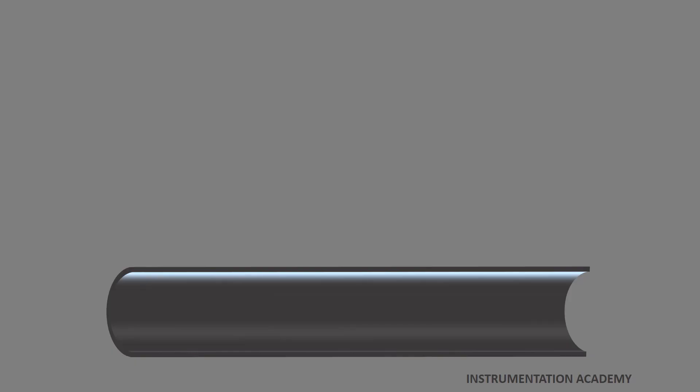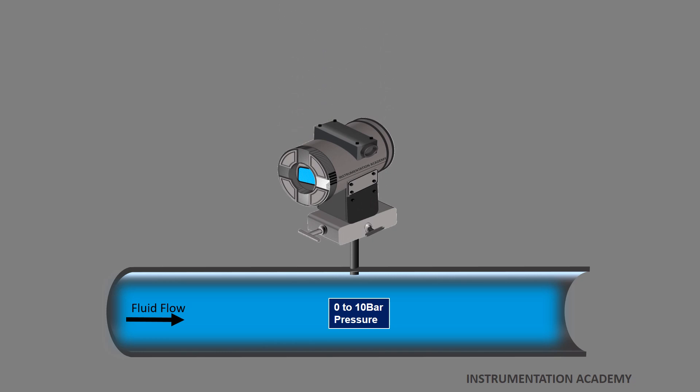Let's consider that a fluid passing through a pipeline exerts a pressure in the range of 0 to 10 bar. A pressure transmitter is connected which is calibrated to generate a current signal in the range of 4 to 20 mA which is proportional to the pressure being exerted by the fluid on the pressure sensor.